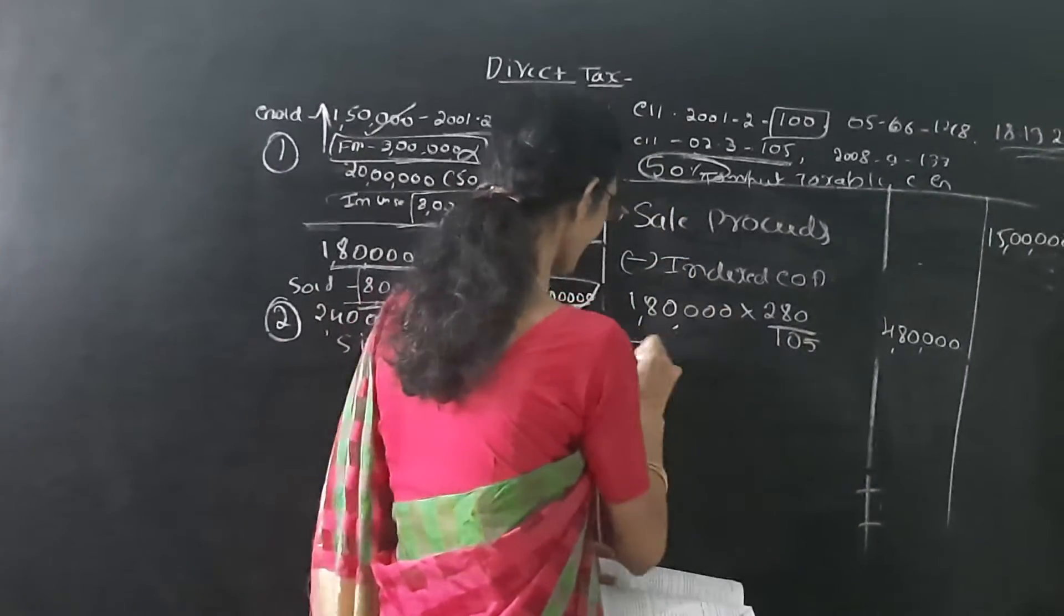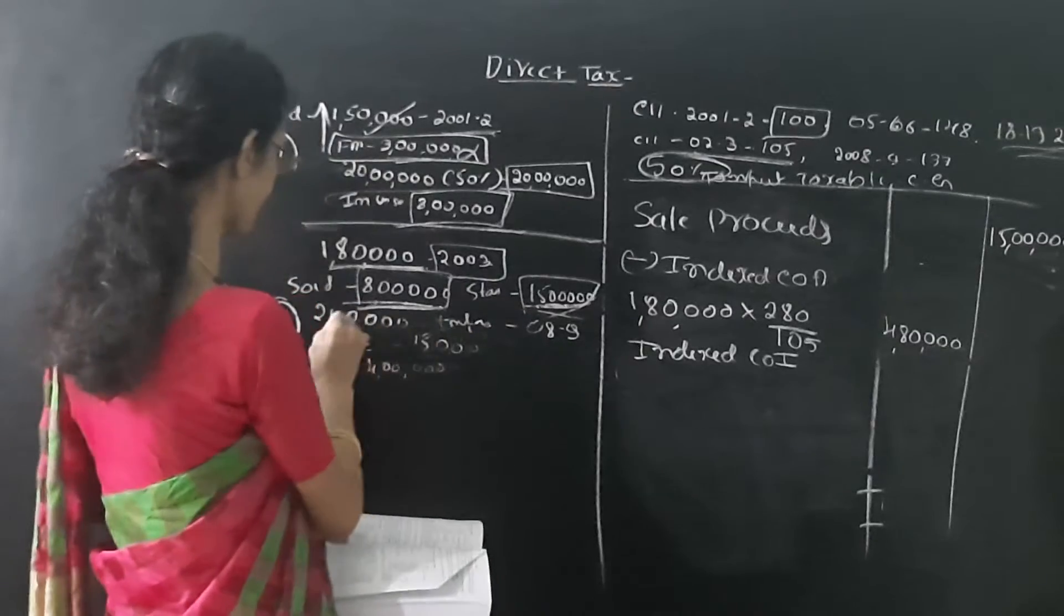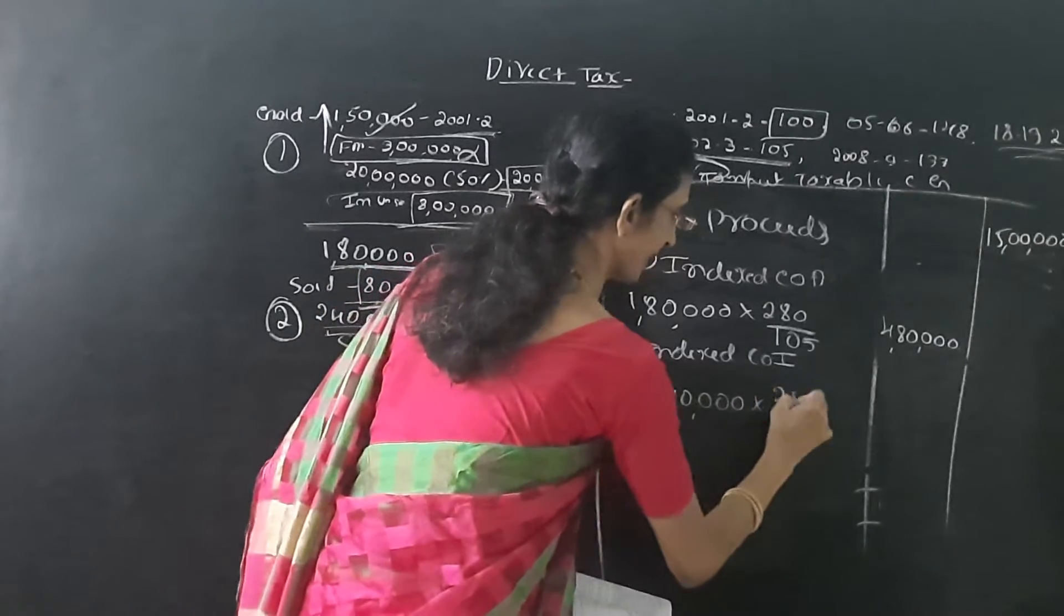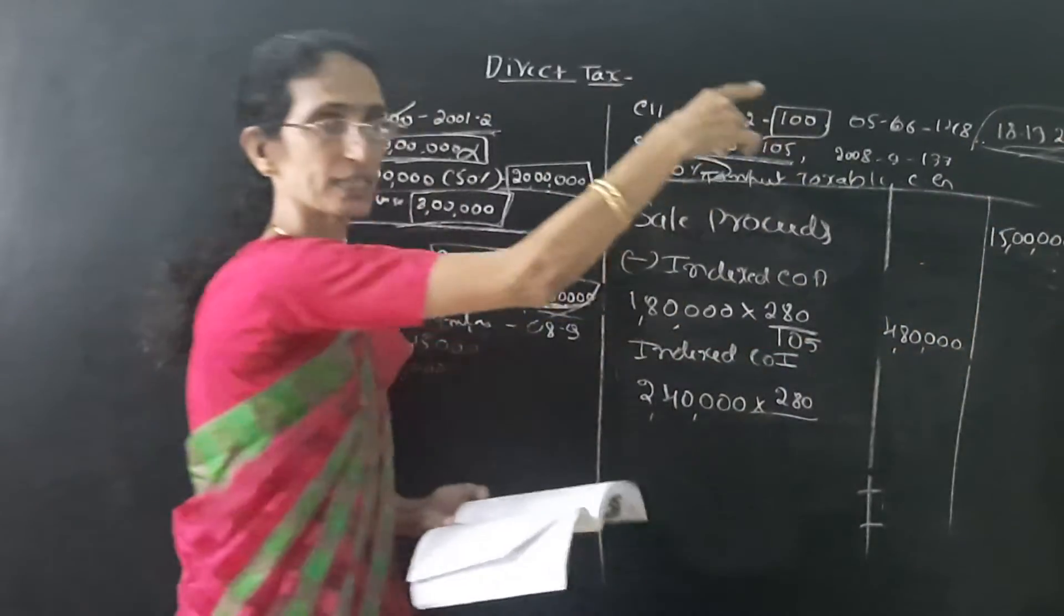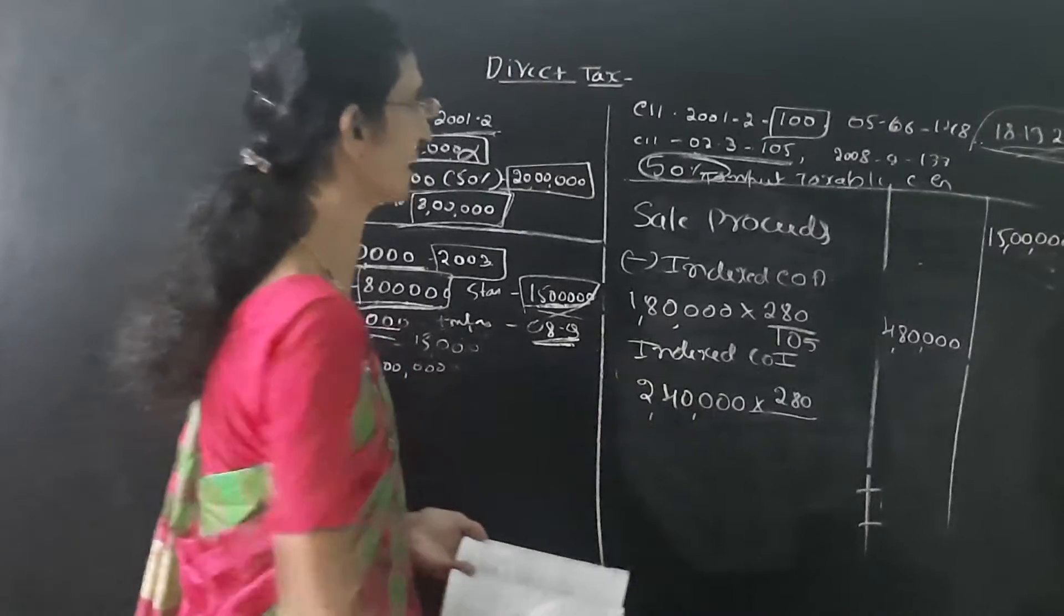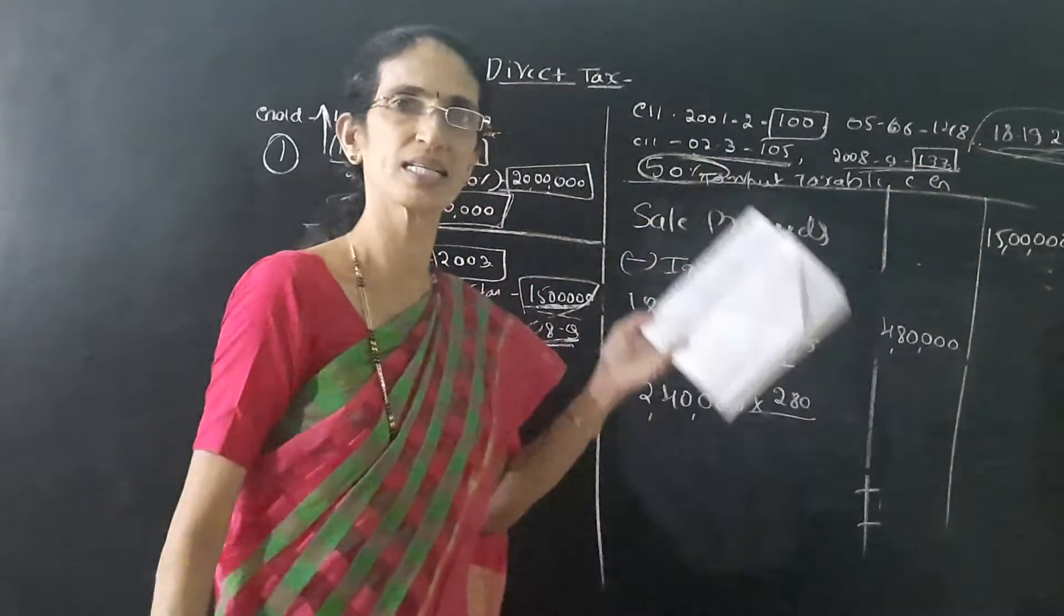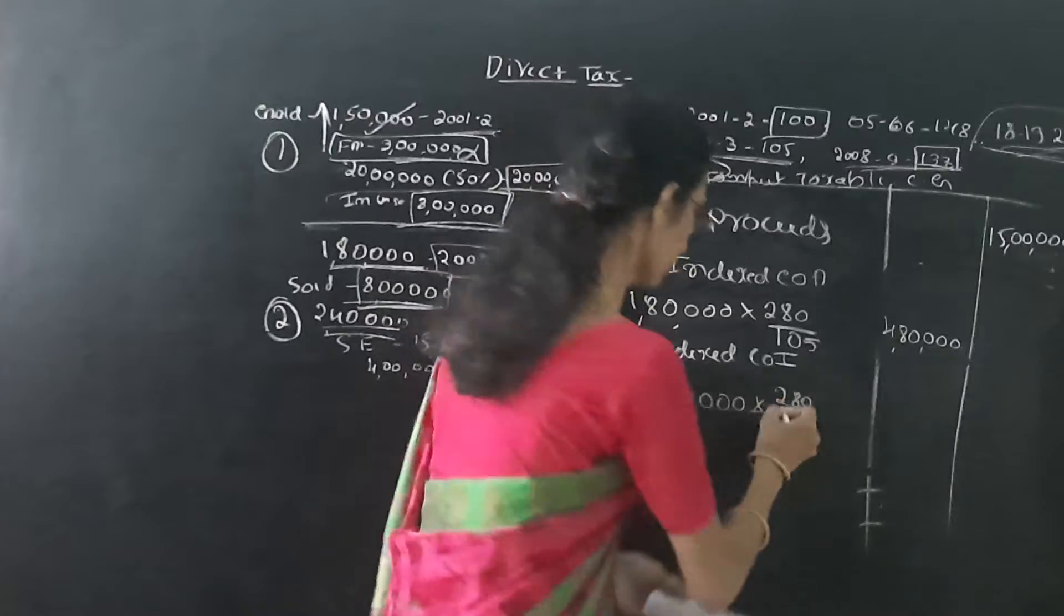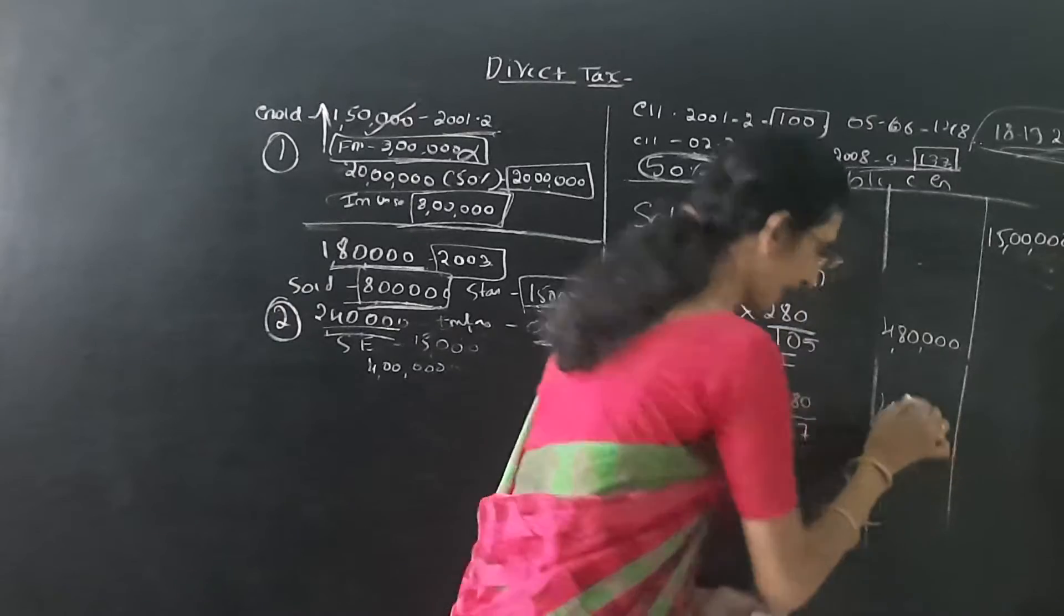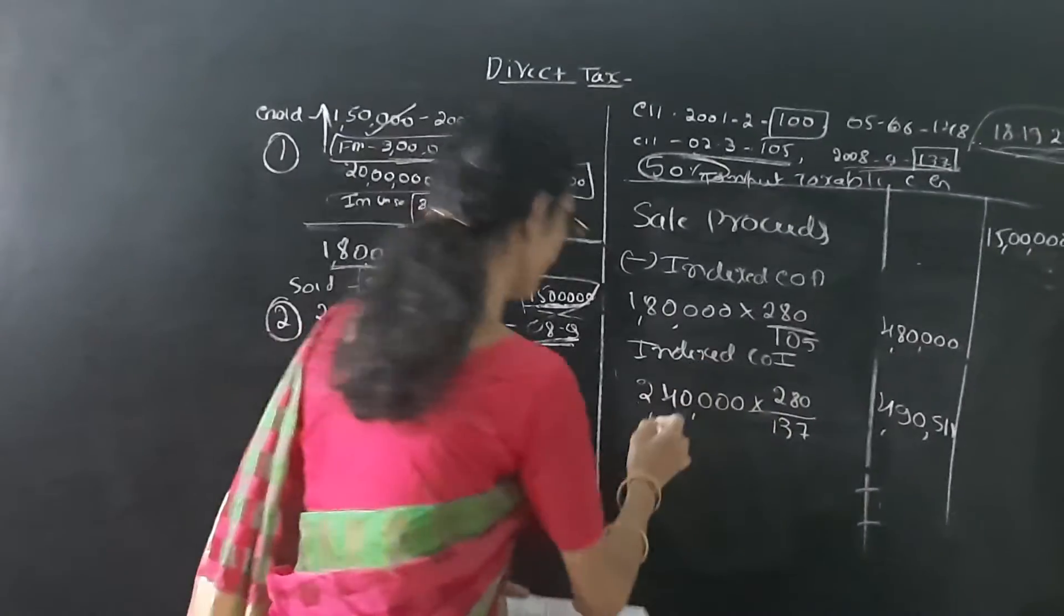Next one is the improvement. Indexed cost of improvement. Improvement made is 2,40,000. This year index is 280. Then improvement is done at 2008-9. So 8-9 index is 137. We get 4,90,511.